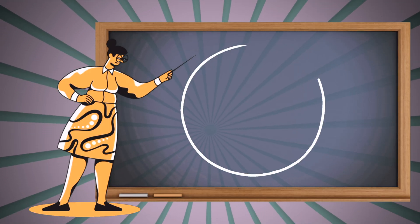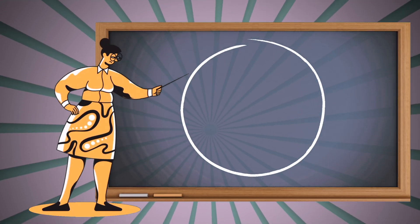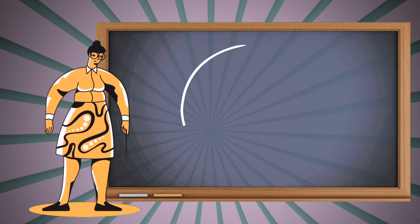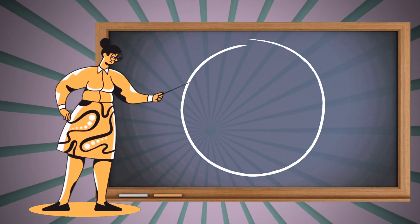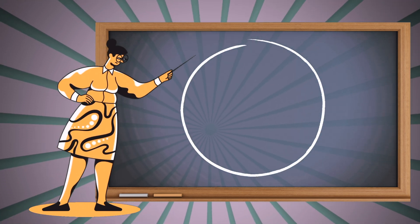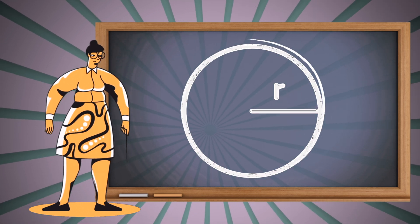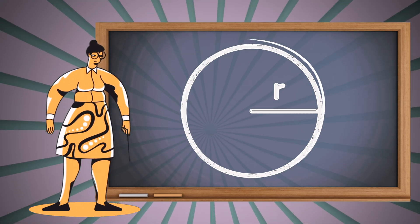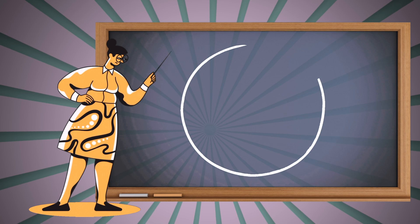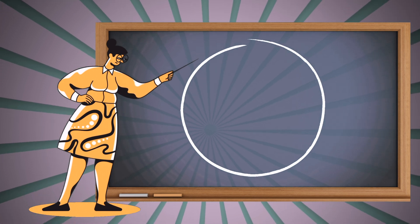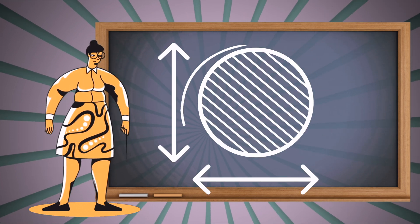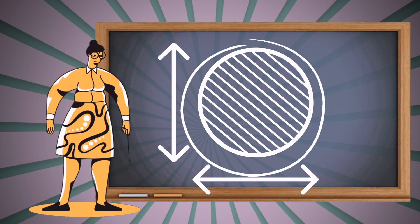In school, you'll also learn about circles in math class. You'll learn how to measure a circle's size using its diameter. That's the distance across the middle of the circle, from one side to the other, passing through the center. And you'll also learn about something called the circumference, which is the distance around the outside of the circle.